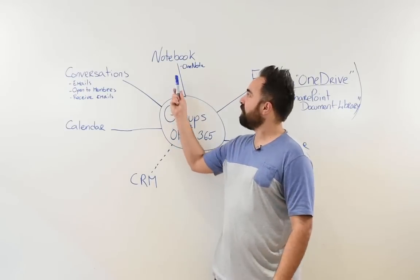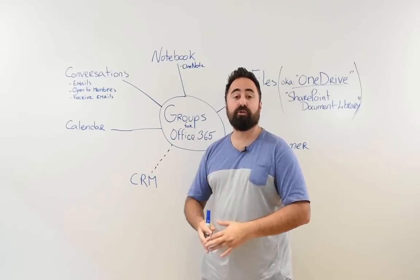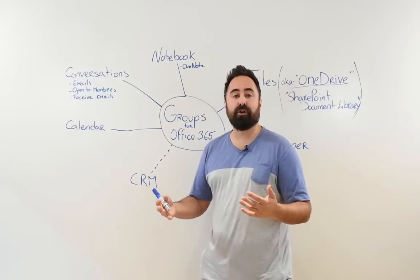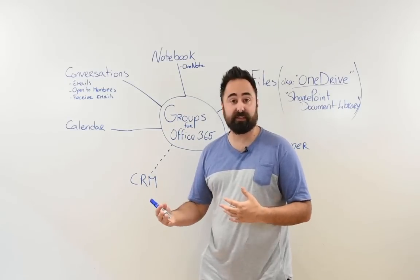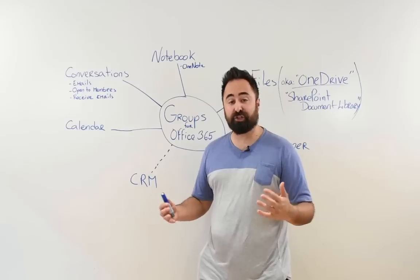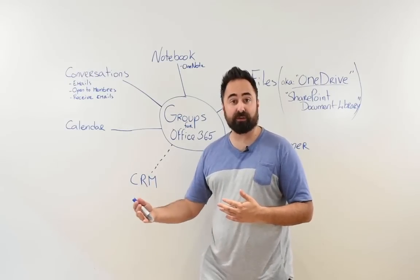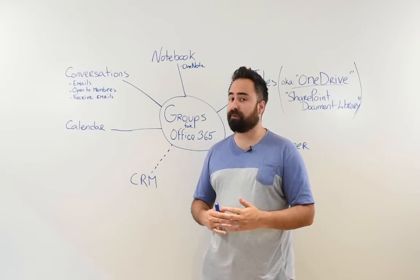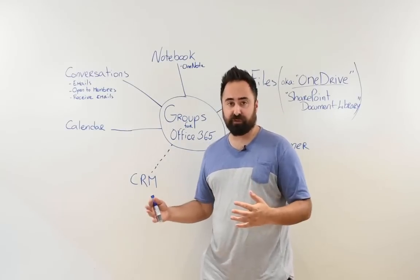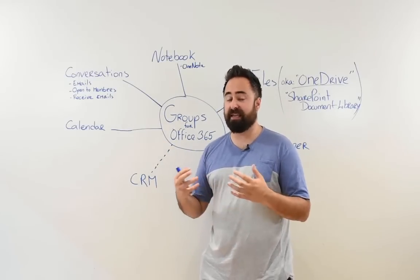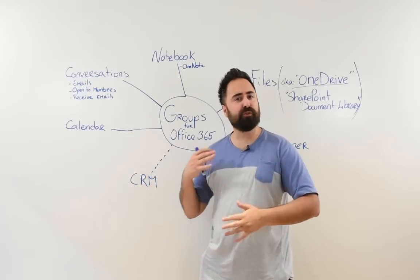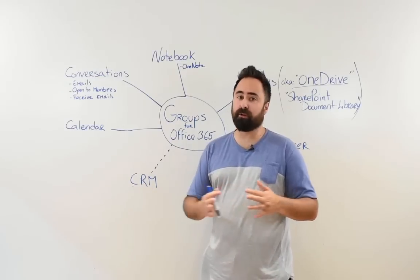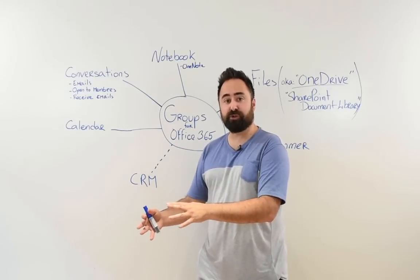Then you have a notebook. Every time you create a group, you also get a notebook, which is essentially a OneNote file that allows you to put some thoughts together. For example, here at ShareGate I work on publishing blogs. We have a group of people — a team — that helps in publishing blog posts: people for design and many different things. We have conversations by email, but they are open emails. So if tomorrow a new person joins the team, they'll be able to see all the previous emails and participate in future ones.